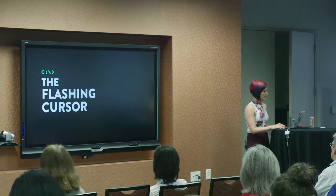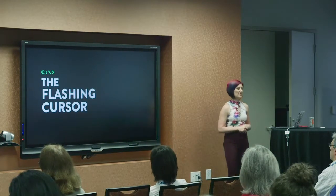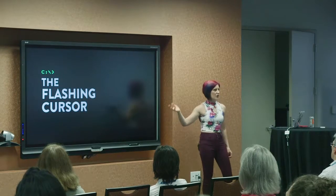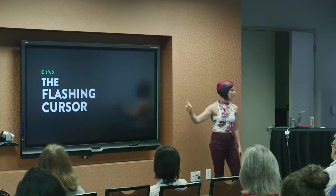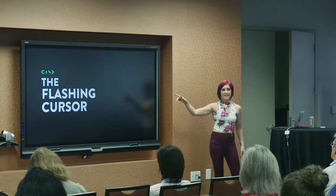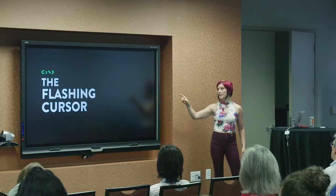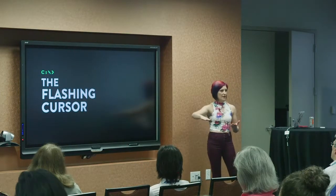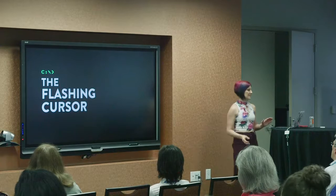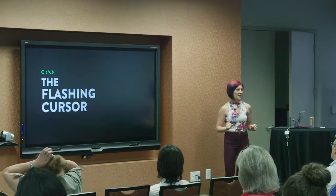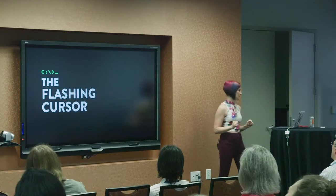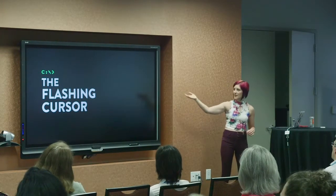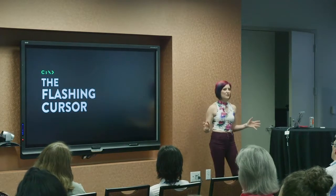I want to talk a little about how animation has been used to provide information since the earliest visual output on computers. The flashing cursor is like the first computer animation, and it conveys actually a whole lot of information. First, it conveys hierarchy — it's telling you this is the thing to look at, the most important thing on the screen right now. It's providing feedback — if the cursor moves while you're typing, that means cool, I am typing and things are happening. It provides status — if the cursor is still flashing, your computer is still working; if it stops flashing, something's broken. And it gives instruction — hey, type here, this is where you interact. Just this basic flashing cursor is conveying so much information with animation.